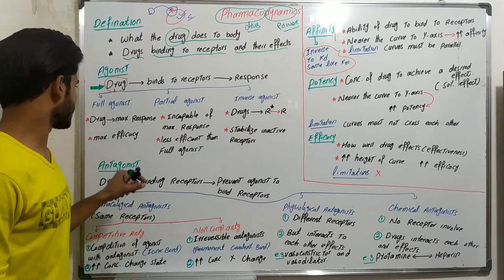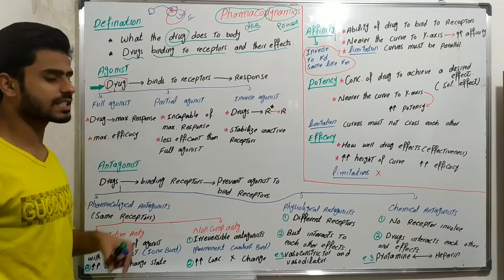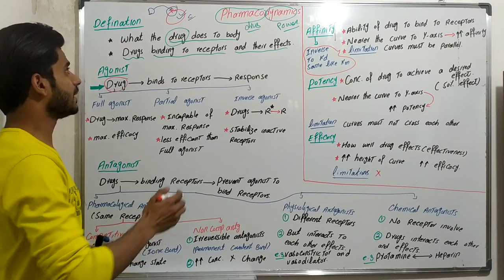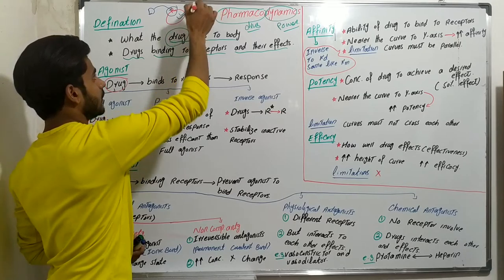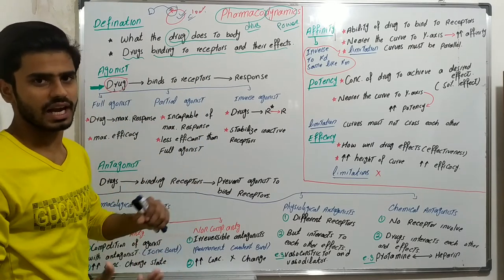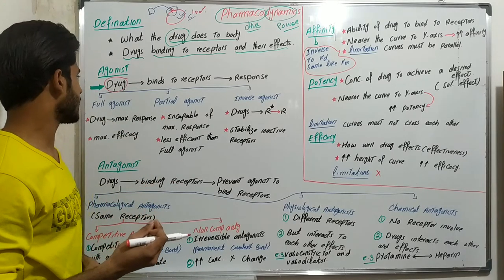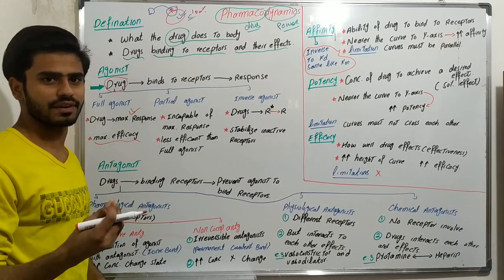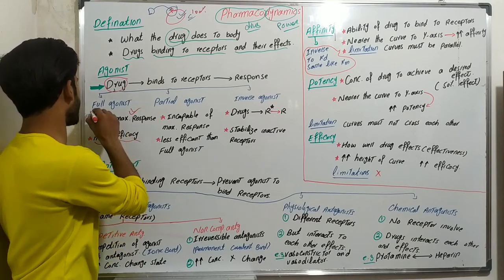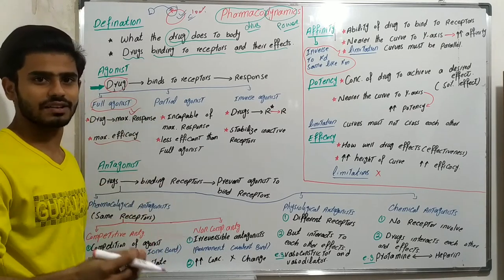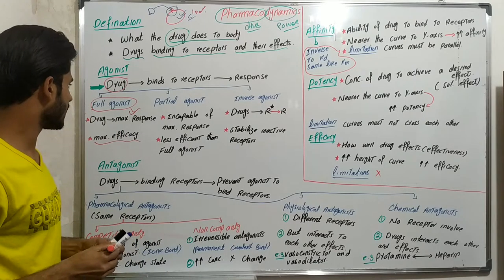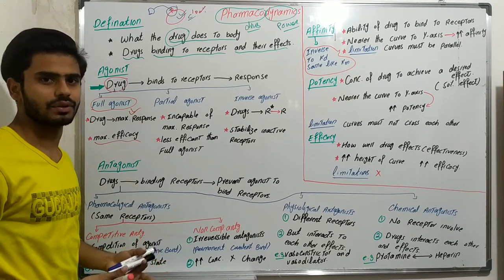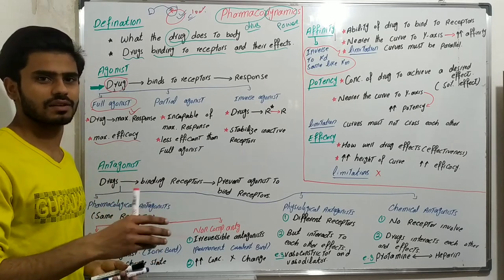A full agonist is when the drug binds with the receptor and gives the maximum response — 100% effects, maximum efficacy, maximum effectiveness. If a drug gives its 100% response, that drug is named the full agonist. Normally, when we use the word 'agonist,' it means this is the full agonist.